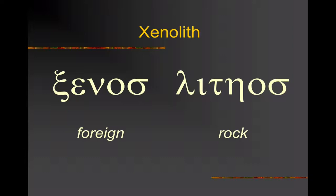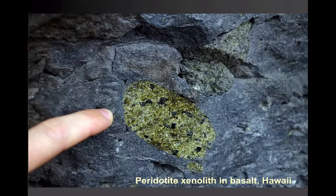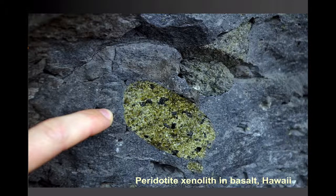What it means is that this is a rock within an igneous rock that doesn't fit, that looks noticeably different from the igneous rock in which it's found. The photograph you're looking at is of a xenolith of a peridotite. You can see just how much olivine there is within this fragment of rock, surrounded by the finer grained, darker basalt.